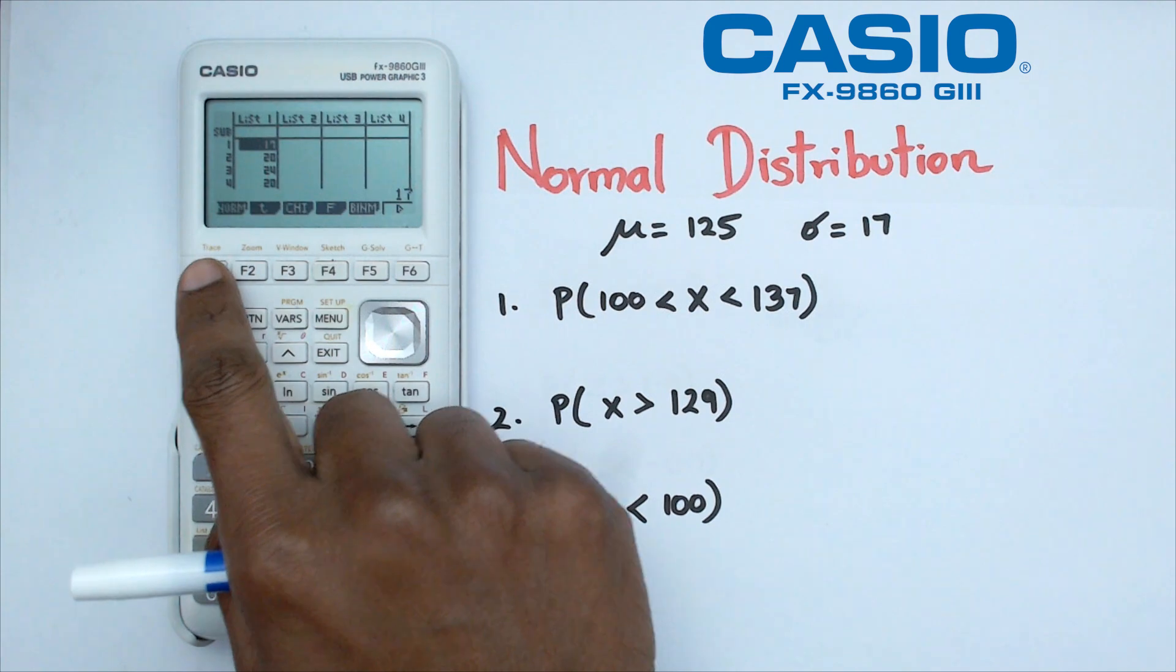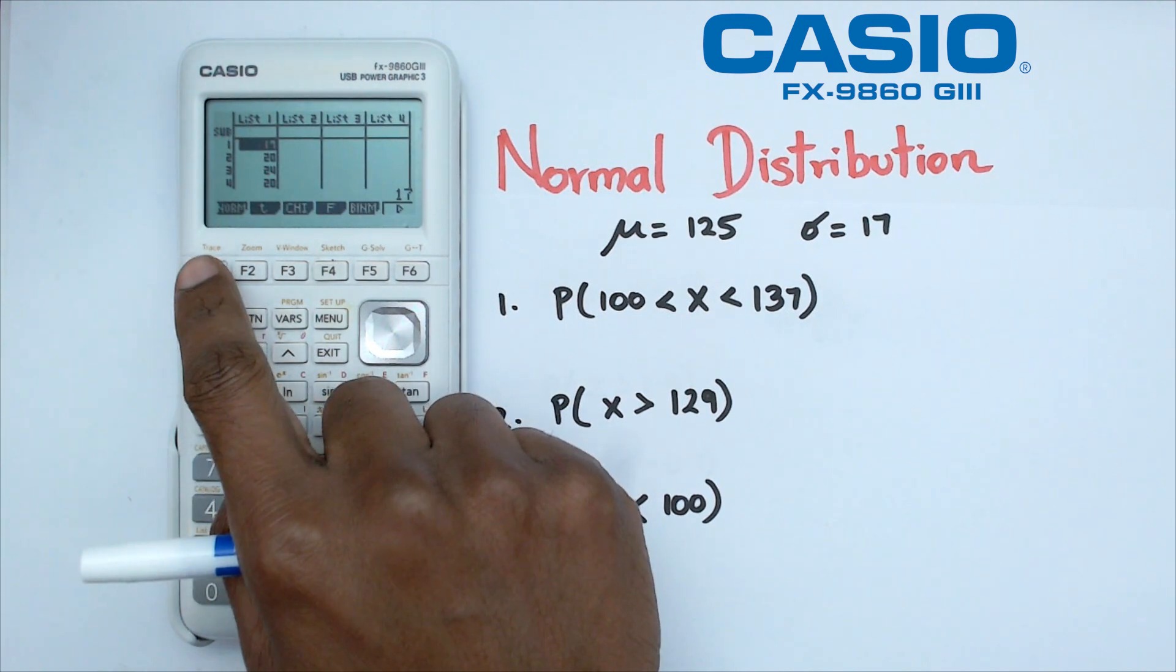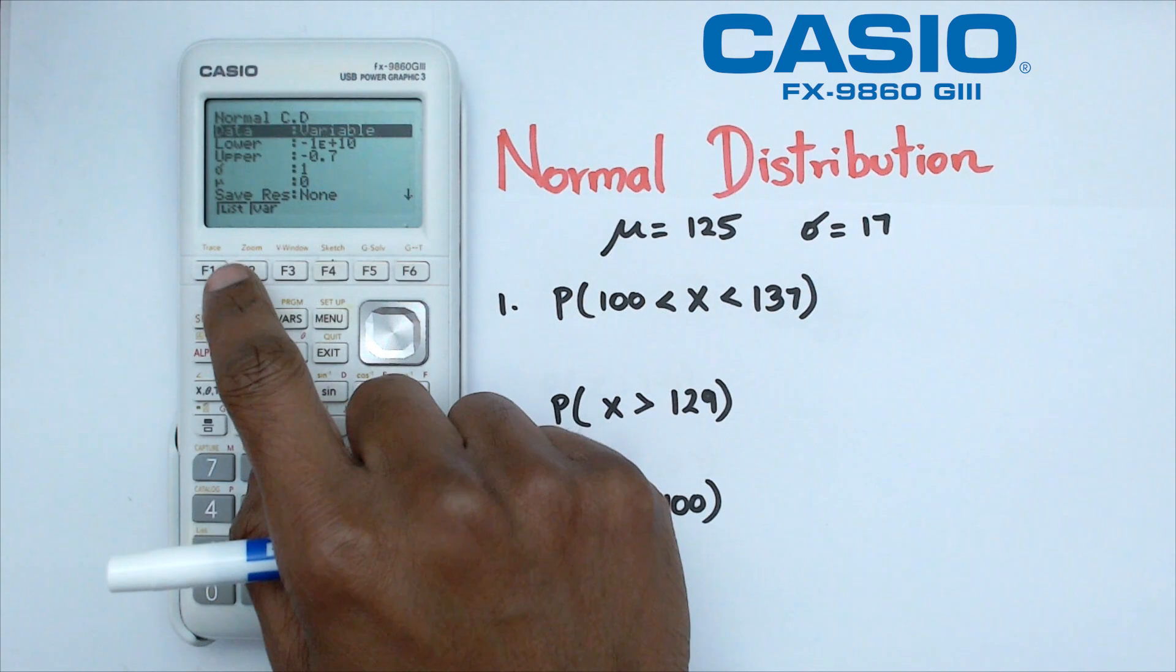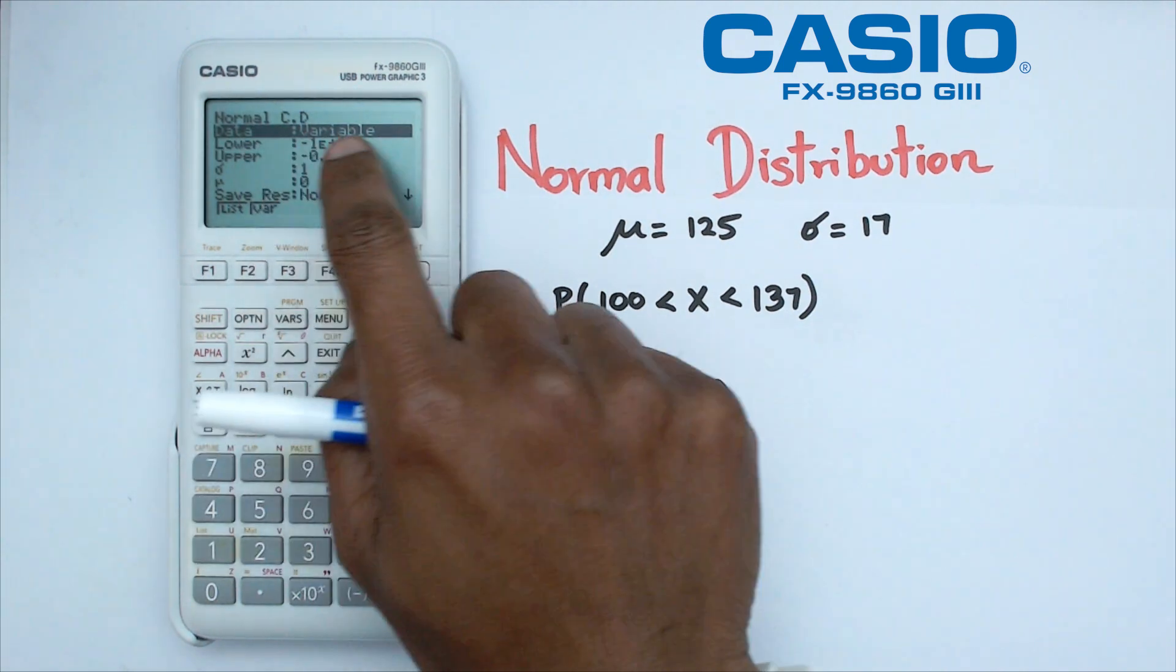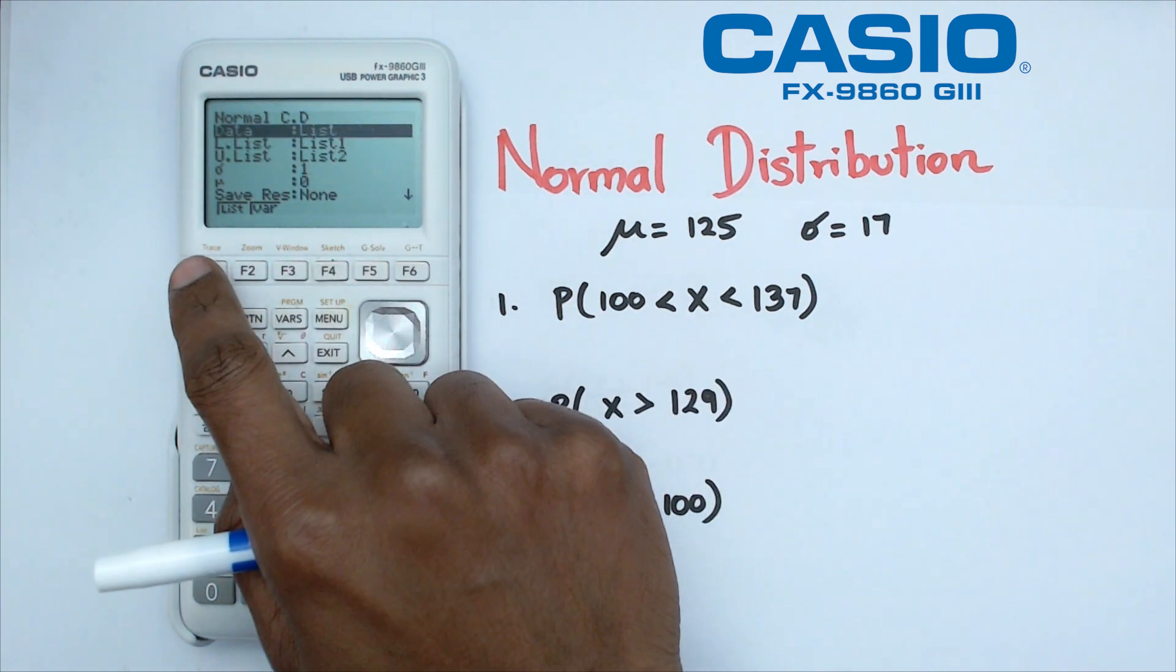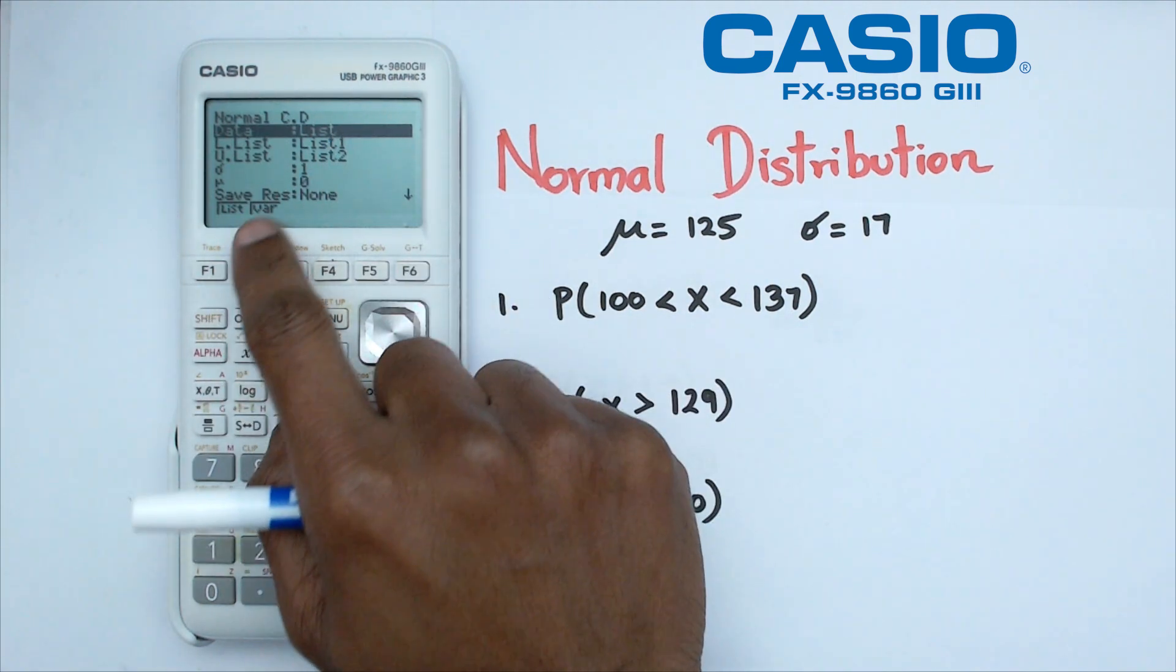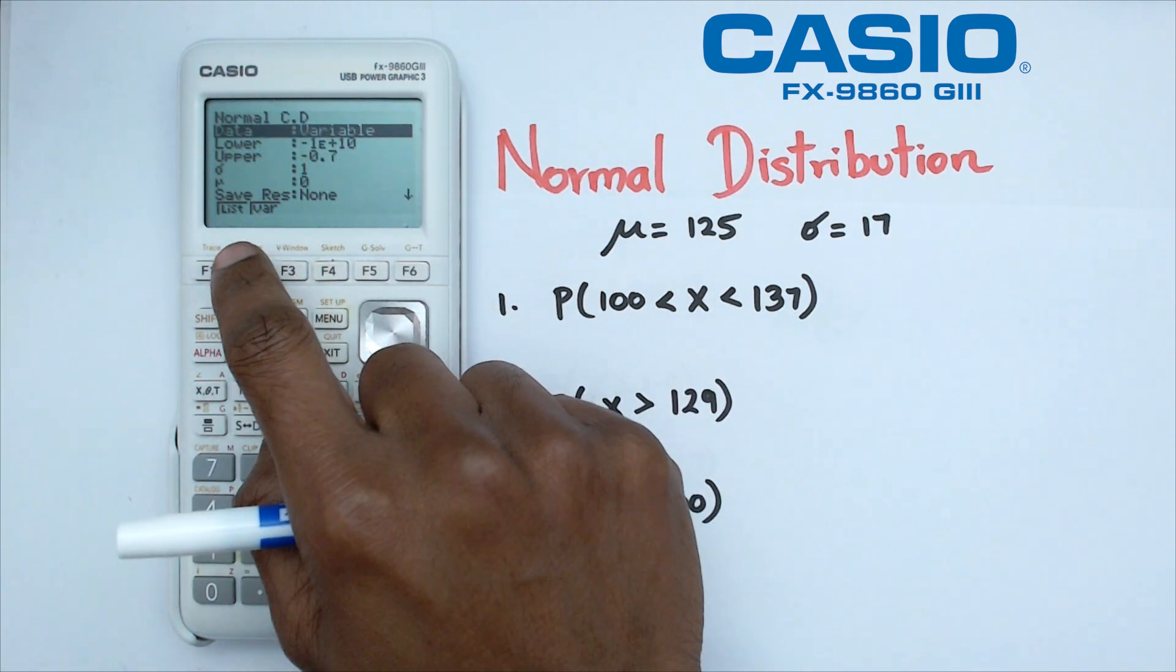Which is F5, and we're going to click on normal, which is F1, and we're going to click on NCD, which is F2. Make sure that your data is in variable and not as a list. If it is shown as a list, just click on F2, which actually changes to variable.